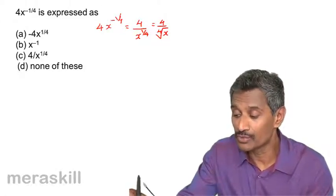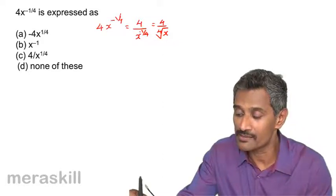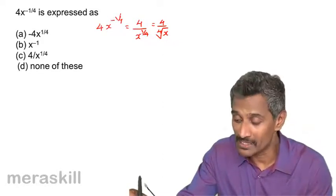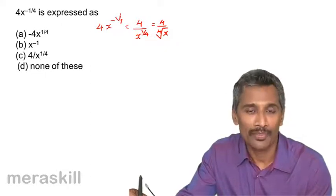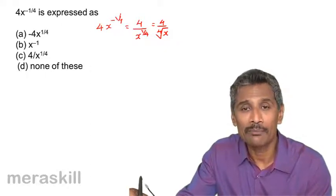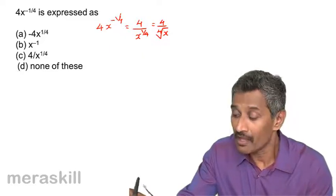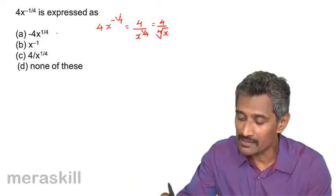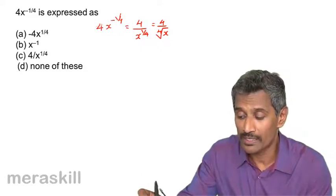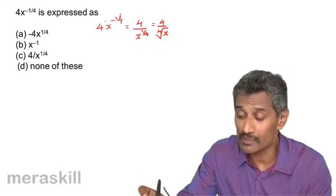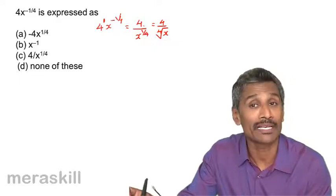So we are actually using a combination of two rules here. One is: x raised to minus a is 1 upon x raised to a, and also the rule that x raised to 1 by n is the same as the nth root of x. The answer among the options is — as I mentioned — 4 is going to remain as 4 raised to 1, so this is 4 raised to 1 multiplied by x raised to minus 1 by 4.